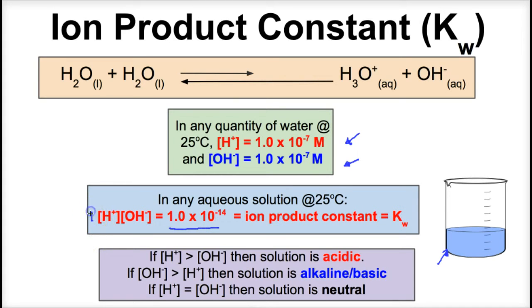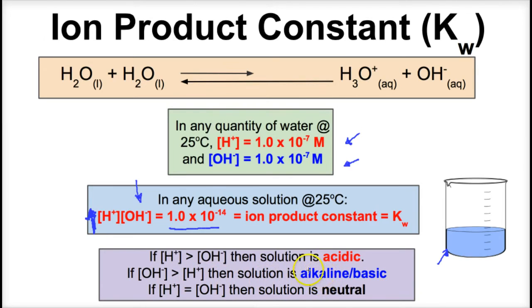If you increase the amount of hydrogen ions in a solution, then the concentration of hydroxide ions decreases, and vice versa. In any aqueous solution at 25°C, [H+] × [OH⁻] always equals this magic number. If [H+] is greater than [OH⁻], the solution is acidic. If [OH⁻] is greater than [H+], the solution is alkaline or basic. If [H+] equals [OH⁻], the solution is neutral.